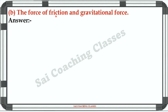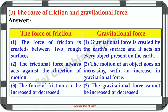B — The force of friction and gravitational force: The force of friction is created between two rough surfaces, while gravitational force is created by the earth and acts on every object on the earth. Frictional force always acts against the direction of motion, whereas the motion of an object increases with increasing gravitational force. The force of friction can be increased or decreased, but gravitational force cannot.